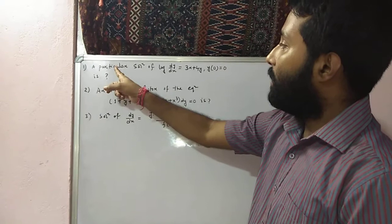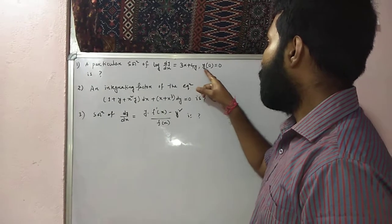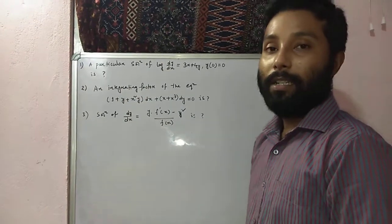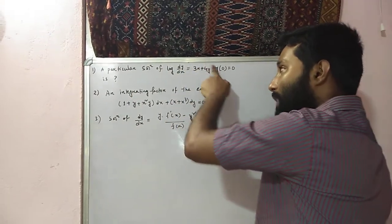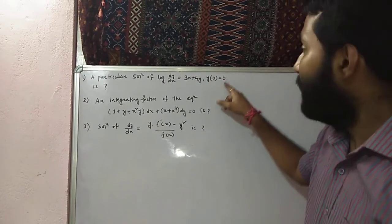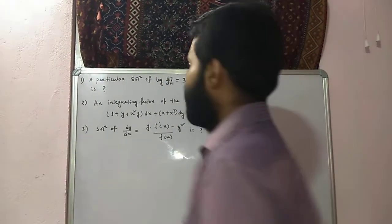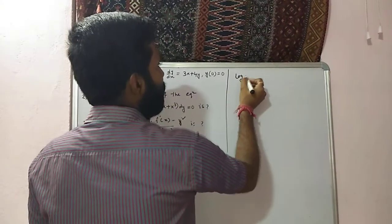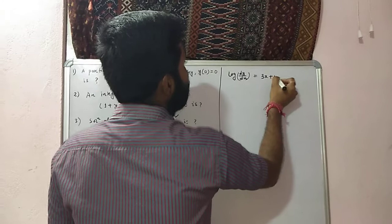The first question is: find a particular solution of the differential equation where y(0) is equal to 0. I have not written the options — I will just explain how to solve these questions. What is the particular solution of this differential equation? There is one condition: y(0) equal to 0. First, try to solve this differential equation. Here the differential equation is: log of dy/dx is equal to 3x plus 4y.